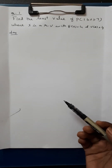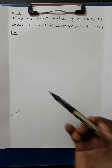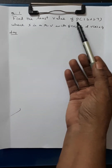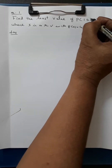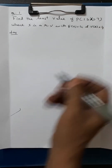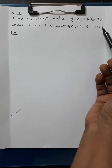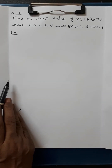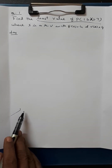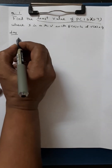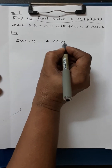Let us discuss some problems under Chebyshev's inequality. Find the least value of P(1 ≤ x ≤ 7), where x is a random variable with E(x) = 4 and Variance(x) = 4. We want to find the least value of P(1 ≤ x ≤ 7), given that E(x) = 4 and V(x) = 4.